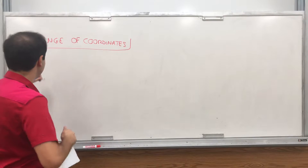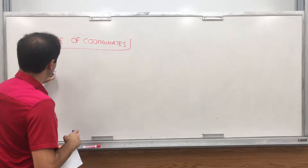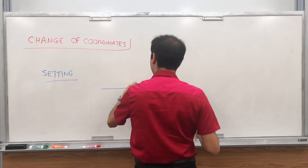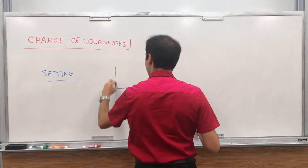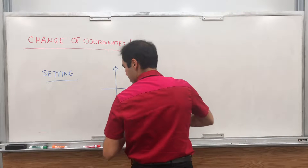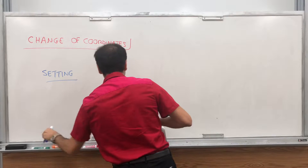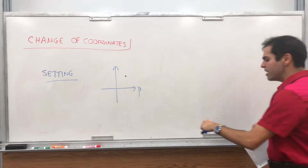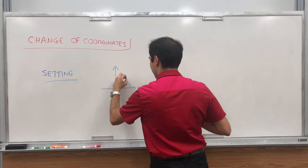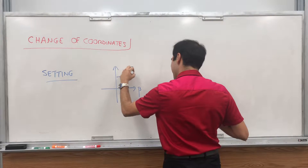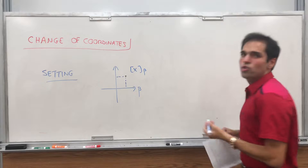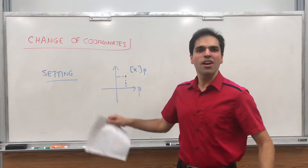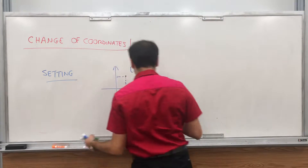Let me explain the setting. Suppose you start with the basis beta. You have this basis beta and a vector x. So you have this vector x, and in beta it has coordinates x_beta. And then suppose you work with this and you think: I don't really like this coordinate system. What if you have a new and cooler coordinate system, gamma?